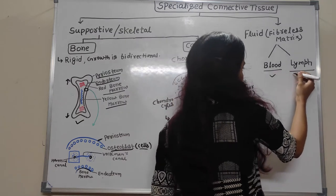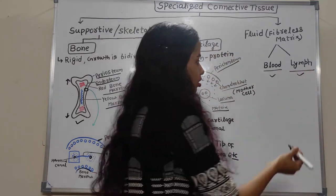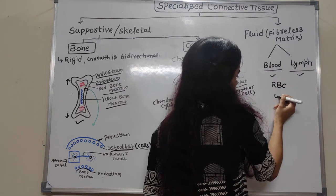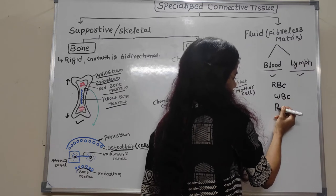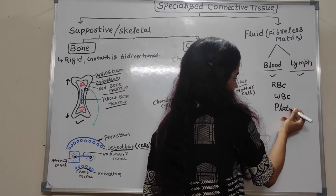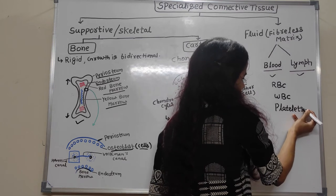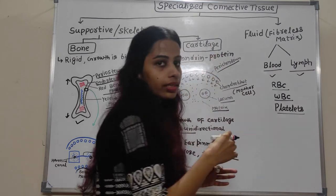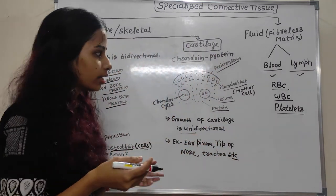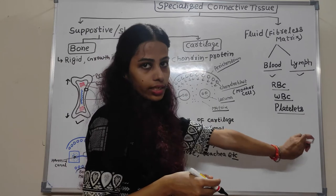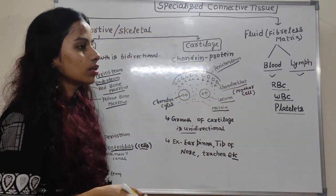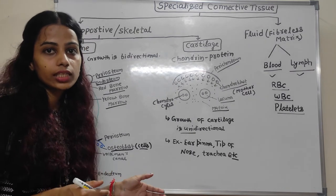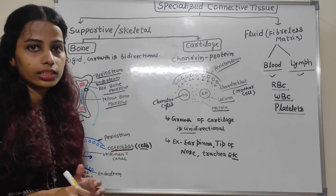Fluid connective tissue has fiberless matrix — no fibers are present. It is divided into blood and lymph. In blood, RBC (red blood cells), WBC (white blood cells), and platelets (thrombocytes) are all present. This covers all about connective tissue and how it is differentiated into different types with diagrams and examples.